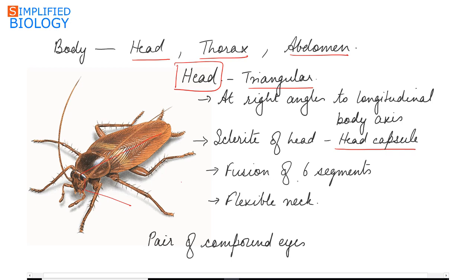Head is formed by the fusion of six segments and it can move in all directions due to the presence of a highly flexible neck. Present at the end of head are a pair of compound eyes. These compound eyes are made up of 2000 ommatidia.